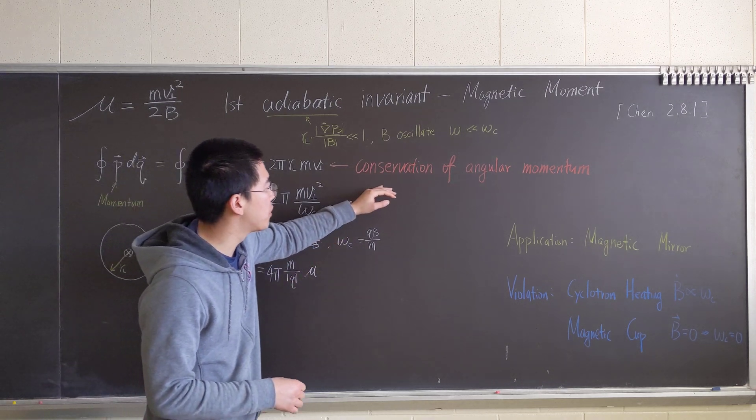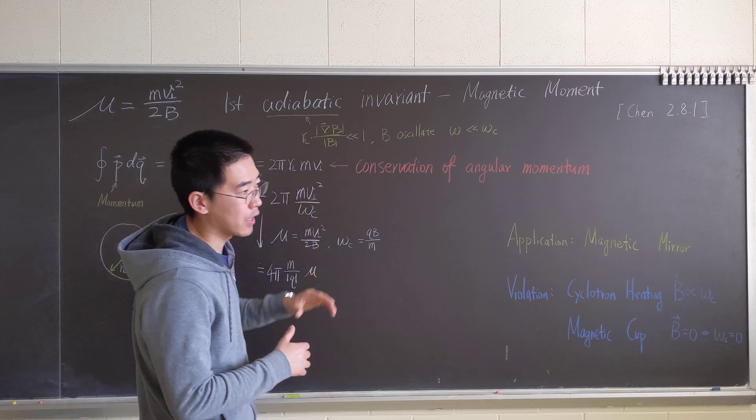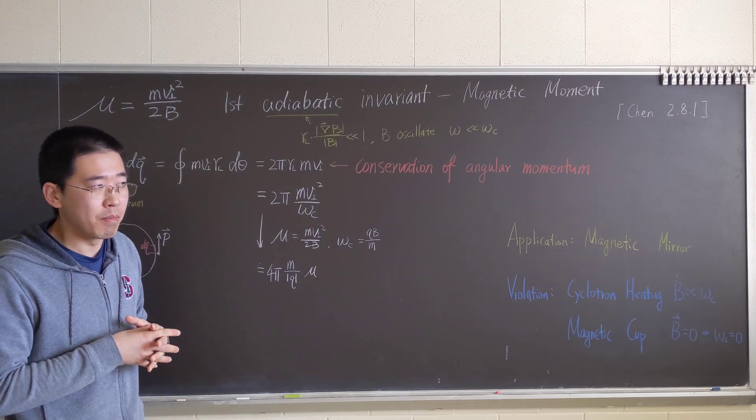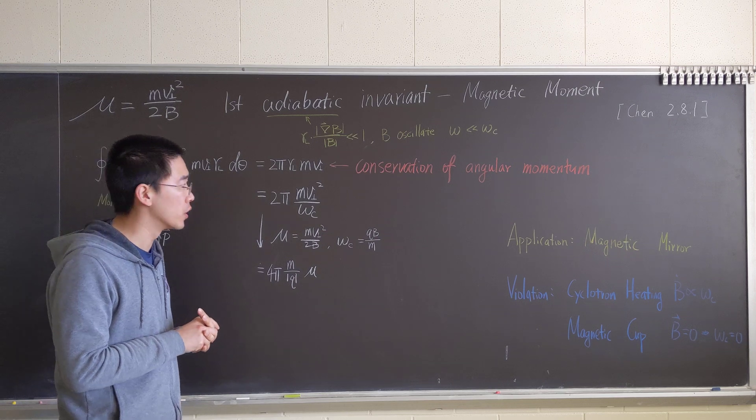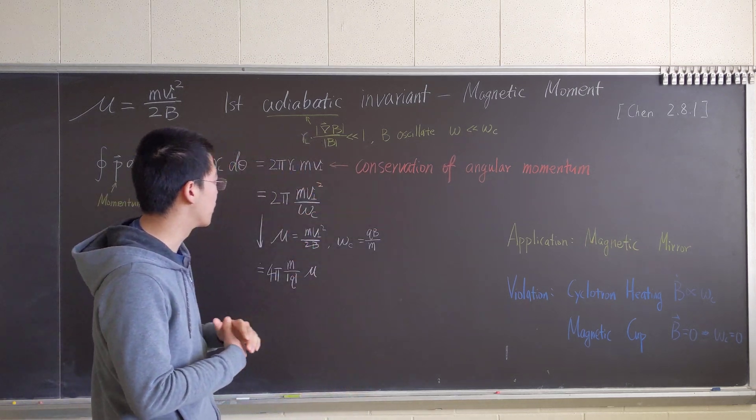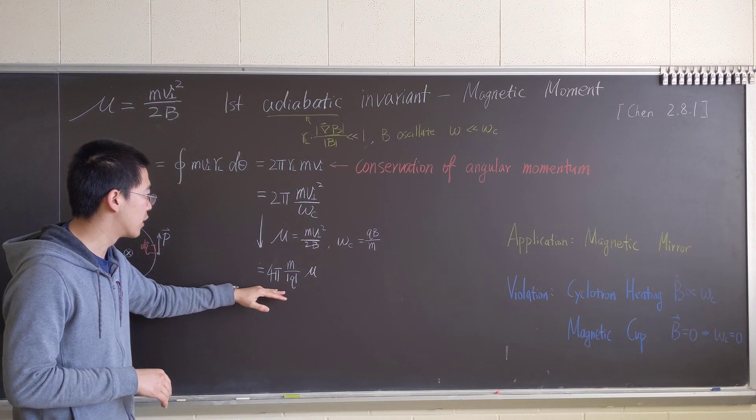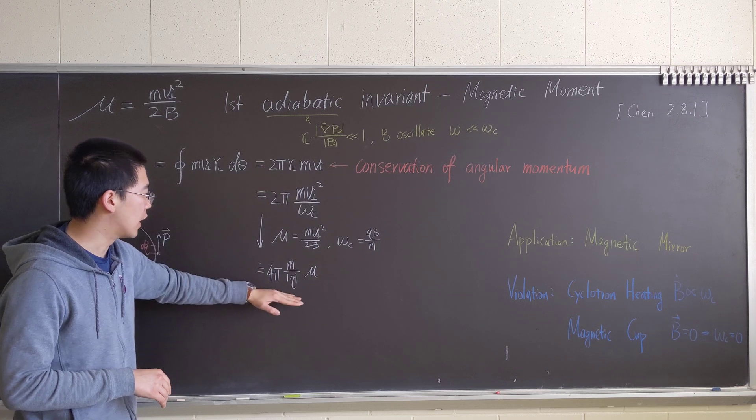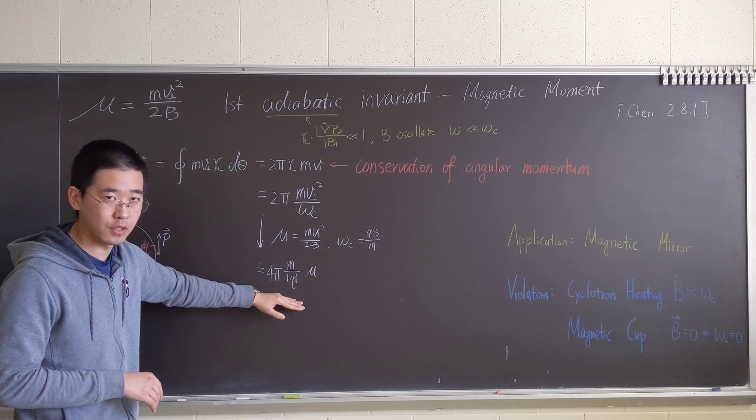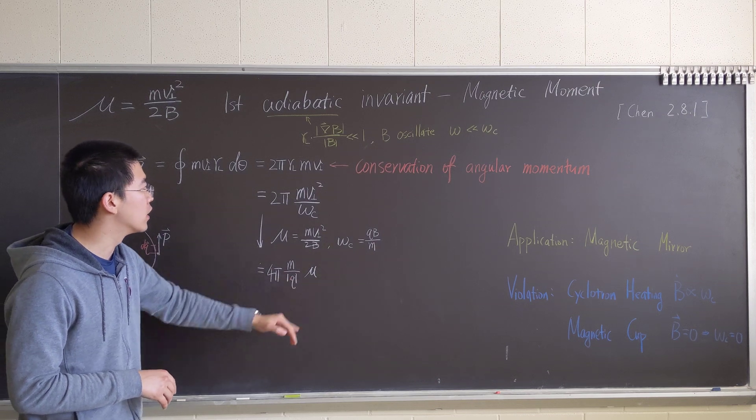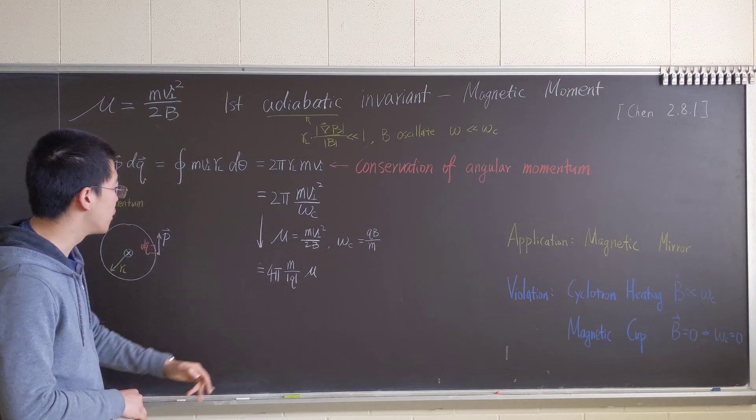So due to the conservation of momentum, since it's adiabatic, that means in terms of time and space, the magnetic field changes slowly. So the conservation of momentum works in this scenario. So what we end up having, conservation of momentum is this is constant, and then that means this is constant. So that means as long as q over m is constant, then μ is constant.